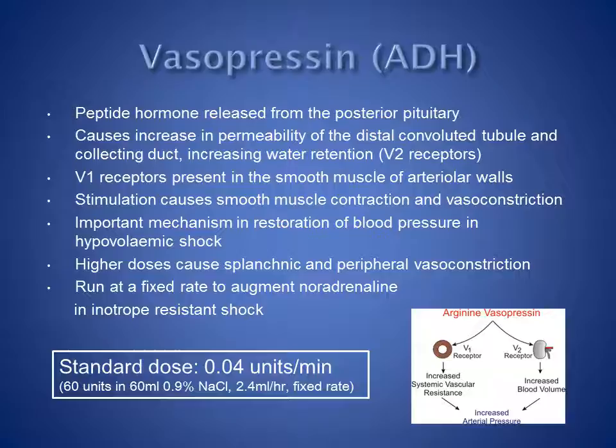It's run at a fixed rate of 0.04 units per minute, and our standard concentration is to make up 60 units in a total volume of 60 mLs with saline. This is run at 2.4 mLs an hour, giving a rate of 0.04 units per minute. So vasopressin is a second-line agent used to assist in restoring blood pressure in patients with severe sepsis.